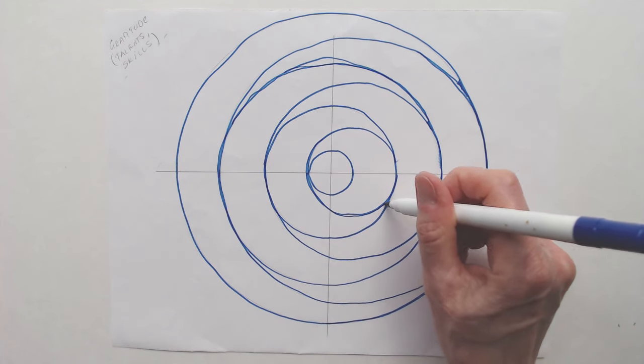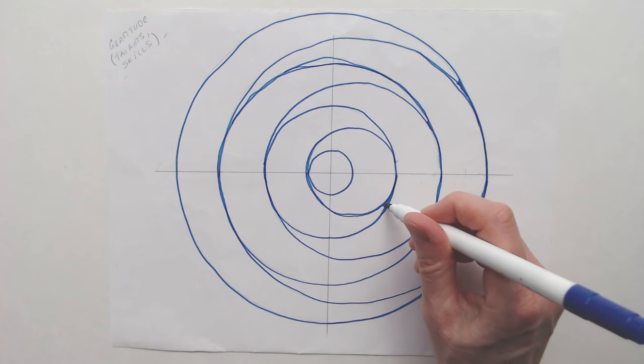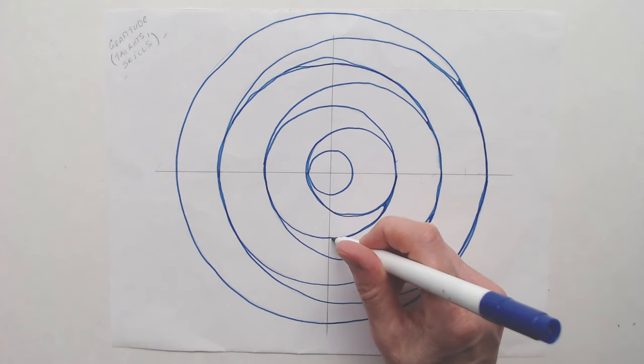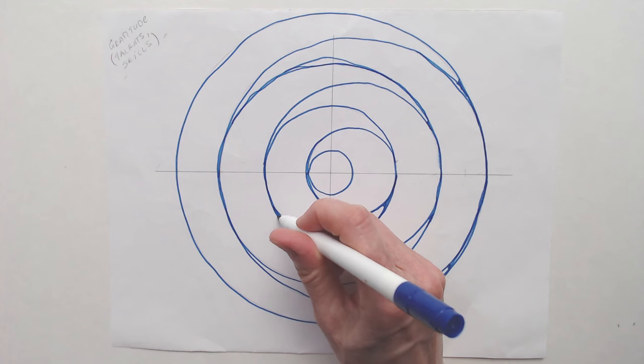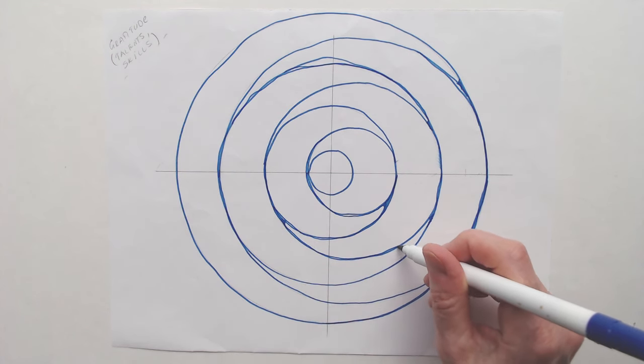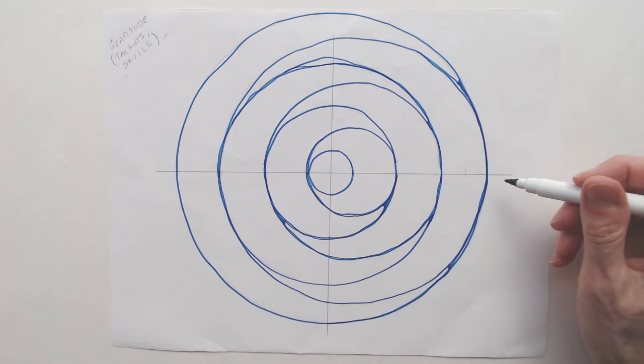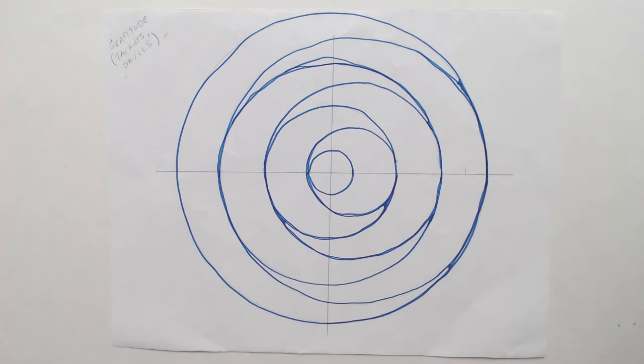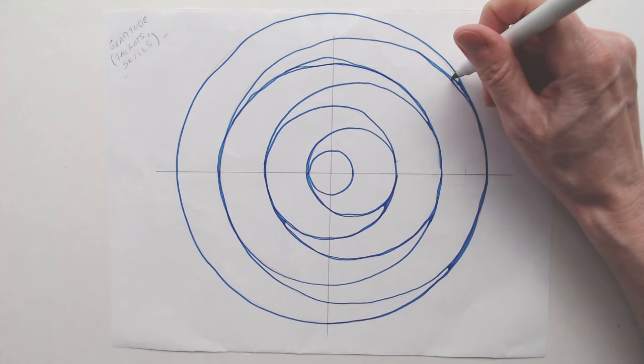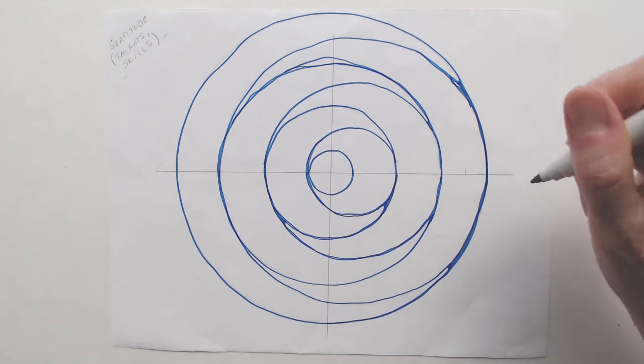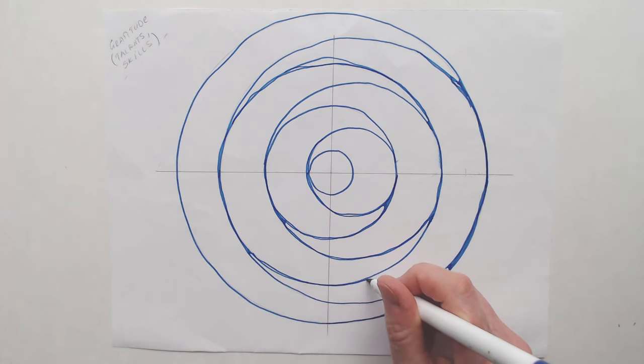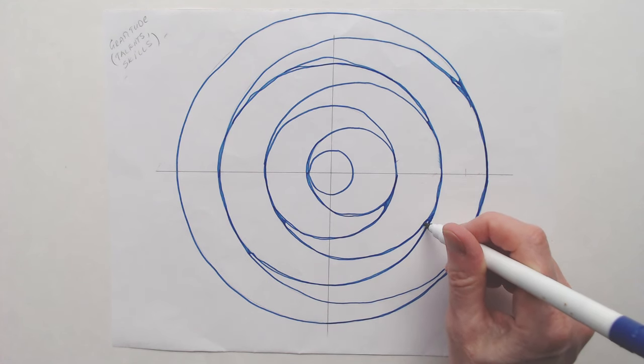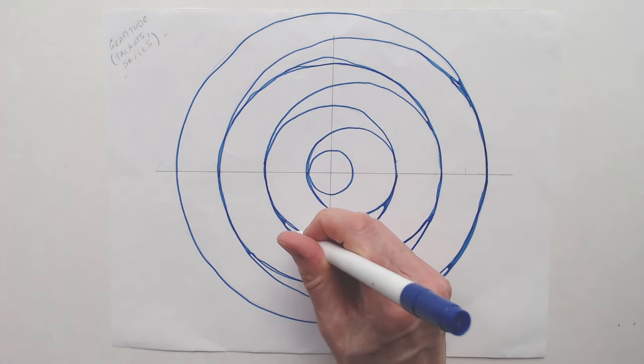As your circles grow larger, imagine them as embracing every aspect of your life. See them encompassing your relationships, aspirations and experiences. With each larger circle, allow yourself to feel more grounded and centered, knowing that you are supported by the universe. Visualize these expanding circles as pathways to new experiences. With each new layer, feel your heart expanding, opening to the world with love and gratitude.